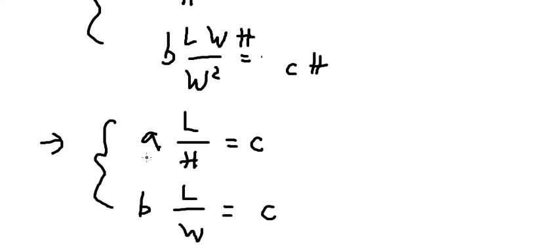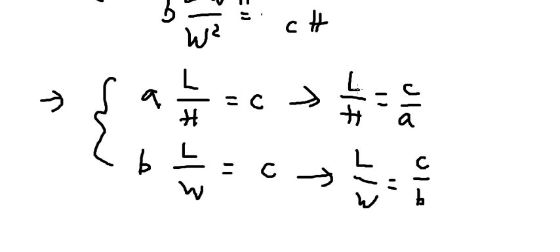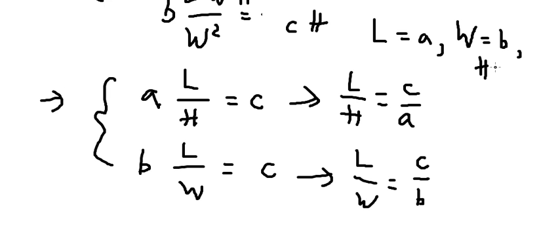Dividing both sides by a and then by b, we find the optimal ratios. Since L over H equals c over a, we get H equal to a·(L/c). Similarly, W equals b. So the optimal dimensions satisfy: L proportional to a, W proportional to b, and H proportional to c.